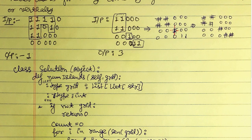We have now done this two times. The third time we search we find a one in the fourth row, flip it to a pound sign, and check its neighborhood. There is no bottom neighbor here, so we just have this single cell. We flip it and we have now done this flipping three times, so the number of islands is three.